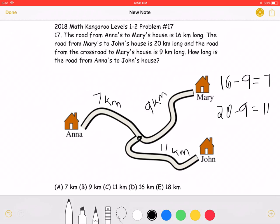The problem asks us for the distance of the road from Anna's to John's house. In order to find that, we must add 7 plus 11, and get a total of 18 kilometers.